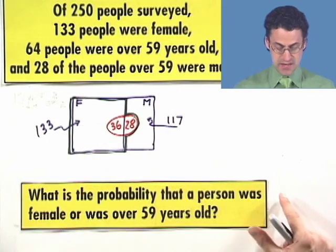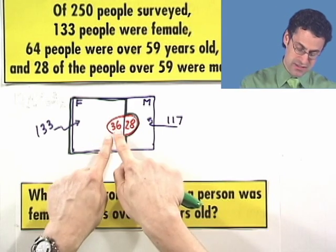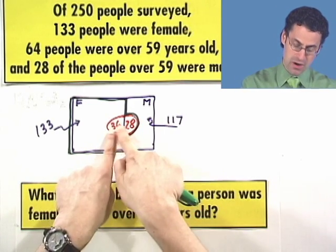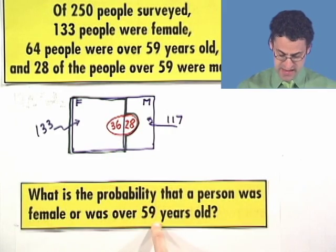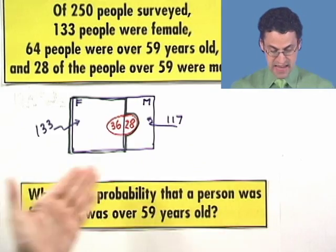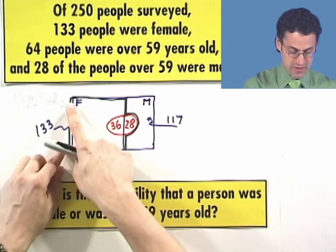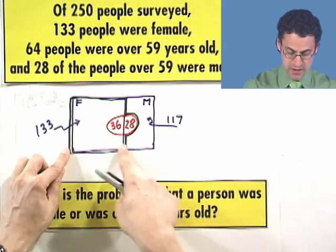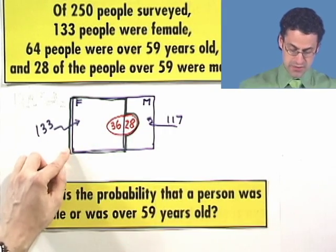That's the question. What's the probability that you're in this mix? Notice that there is this overlap because the 36 women are 59, so they satisfy this category, and they're also female. So, they're in both. But if we just now take a look at this, we can see exactly how many people are in the green region. There's 133 right in the rectangular region plus another 28.